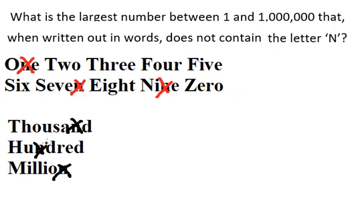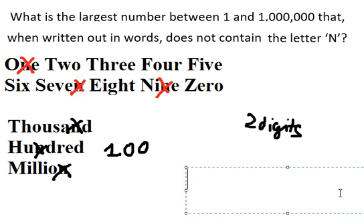We see that hundred is crossed out, so the highest we can use is one hundred, which means we just have only two digits. So in this situation, the answer is eighty-eight.